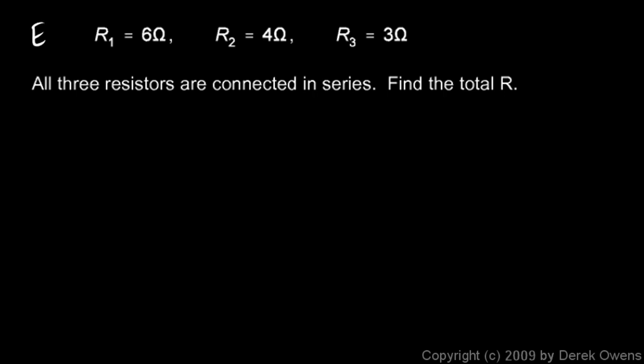This first one is pretty simple. We're told that R1 is 6 ohms, R2 is 4 ohms, and R3 is 3 ohms. They're connected in series, and we're told to find the total resistance. Well, this is trivial. The total resistance is just R1 plus R2 plus R3. So you just add them up, and you can do that in your head. 6 ohms plus 4 ohms plus 3 ohms is 13 ohms, and that's your answer.